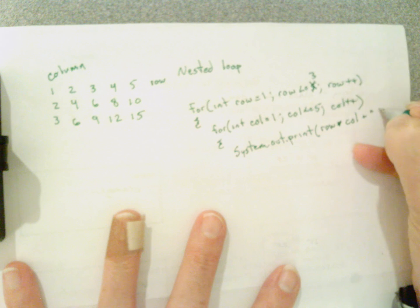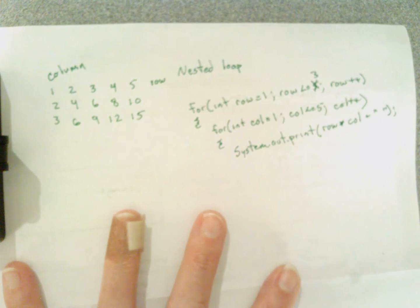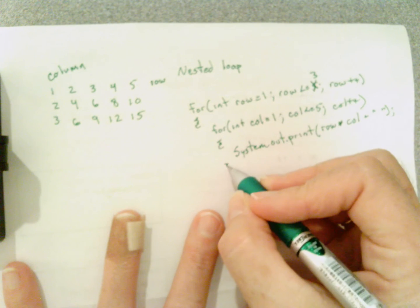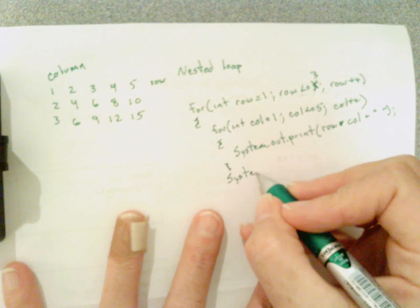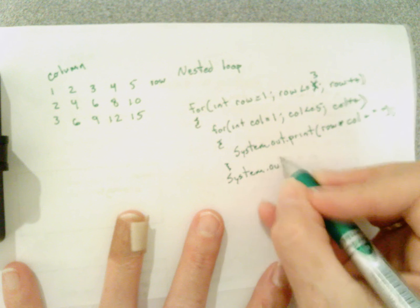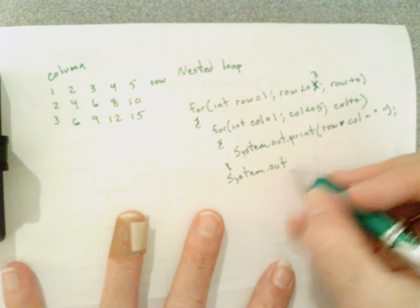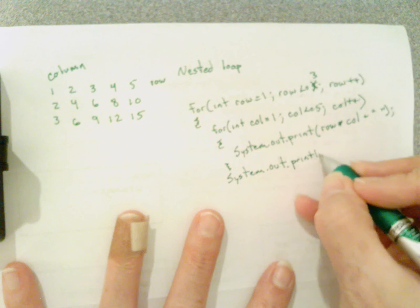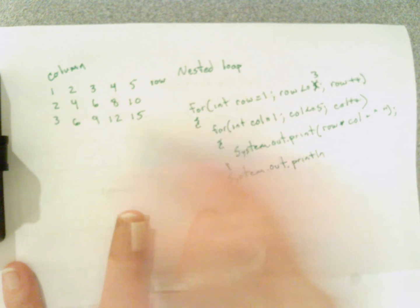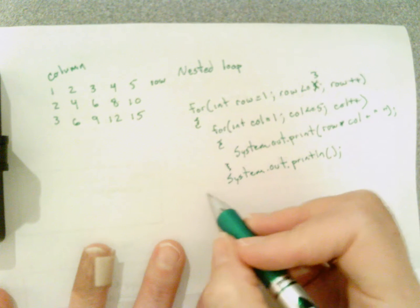I'm going to follow that with a little bit of a space just to make the spacing more beautiful. And then when I'm done with that inner loop I need to do a println so I go down to the beginning of the next line. If I did a println inside my inner loop here instead of a print, it would print one long column rather than a beautiful table like this. So just do a println like that.